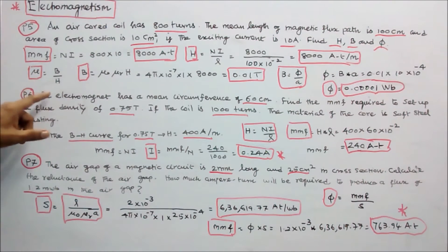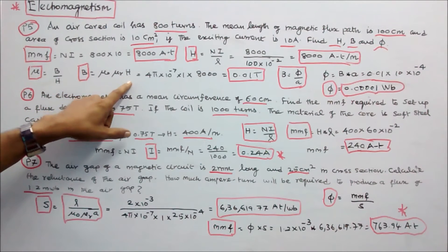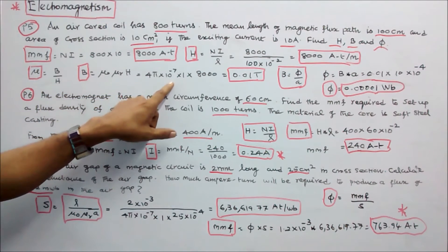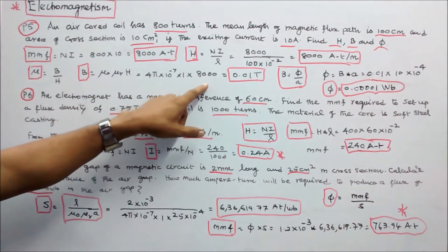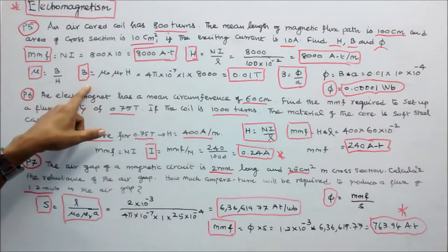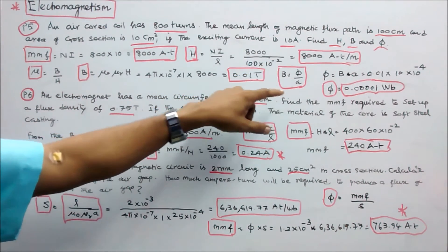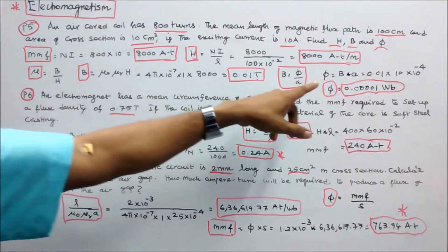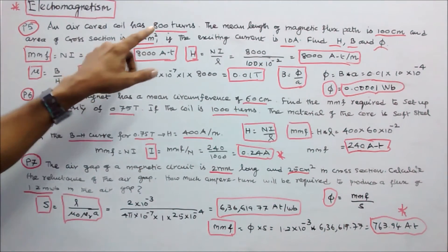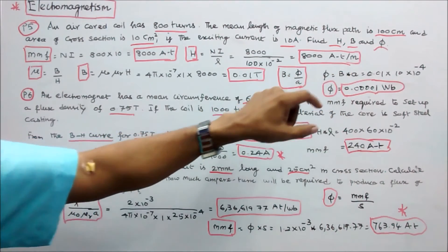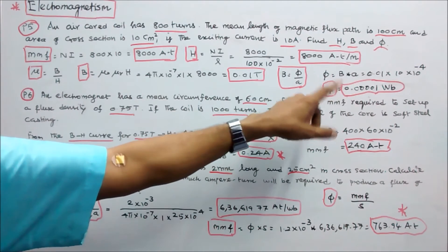Permeability mu equals B divided by H, so I can find B. B equals mu0 into muR into H. Mu0 equals 4π into 10 power minus 7. MuR equals 1 because it is an air core coil. H equals 8000. Magnetic flux density B equals 0.01 tesla. From B equals Φ divided by A, Φ equals B into A. Area is 10 cm square. Φ equals 0.01 into 10 into 10 power minus 4, giving Φ equal to 0.000001 Webers.